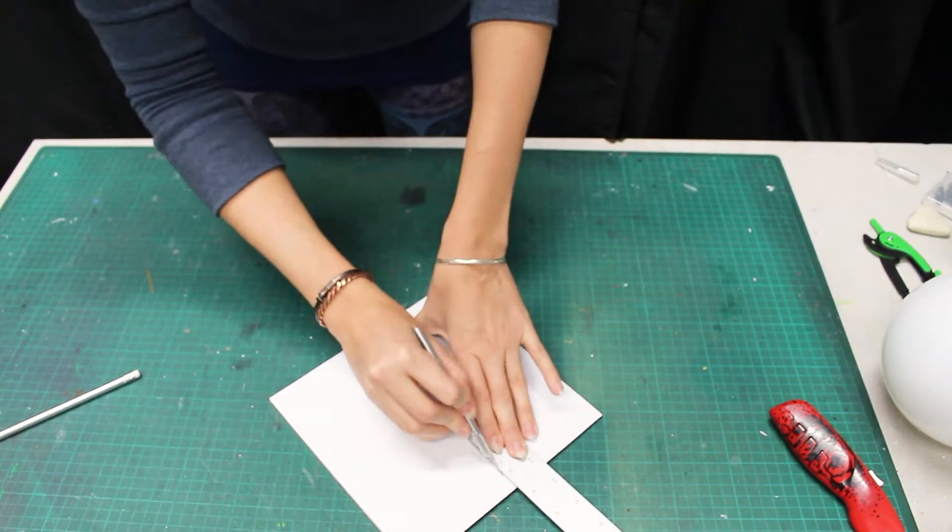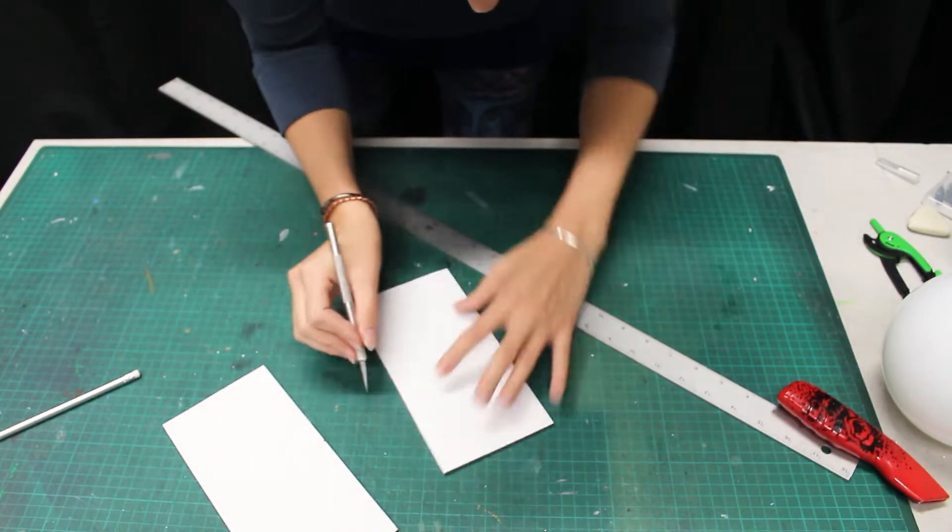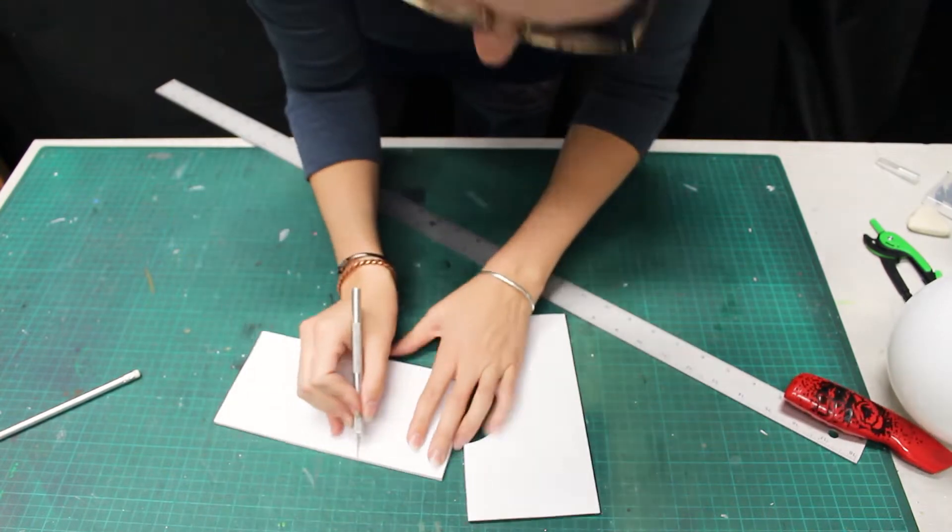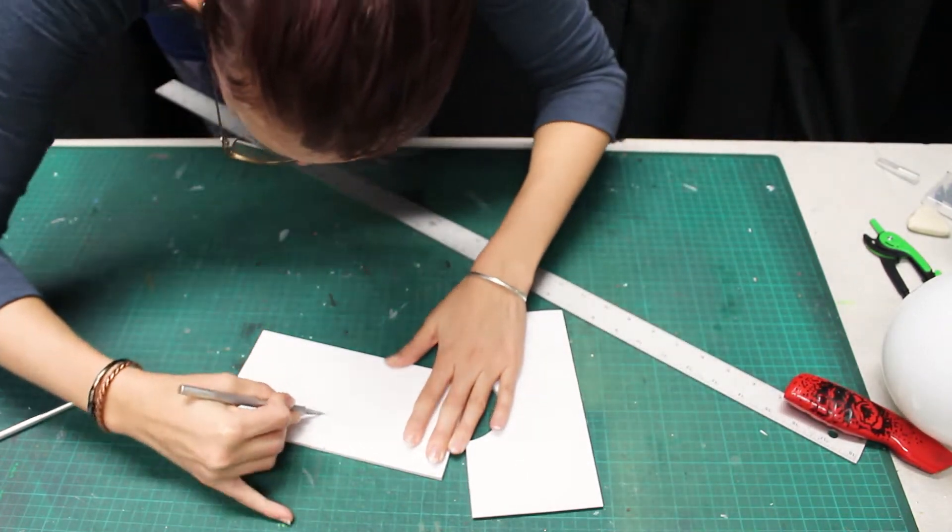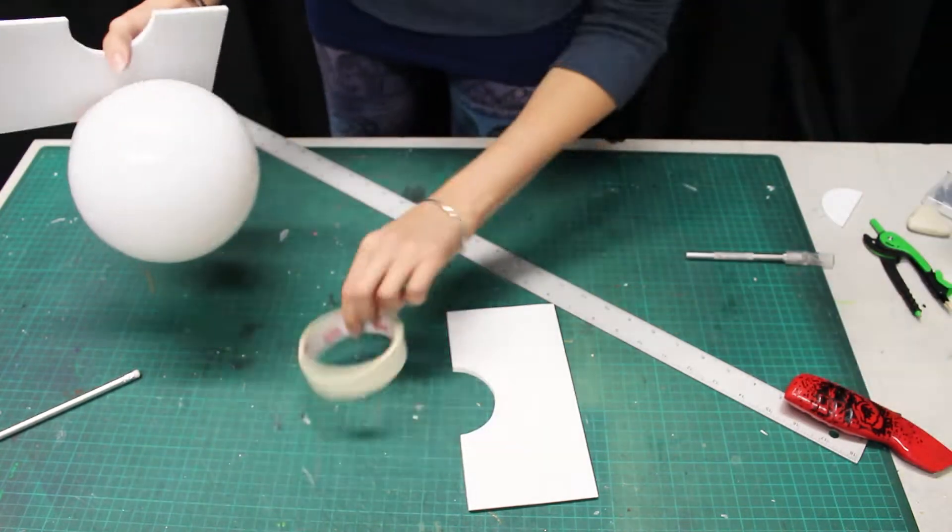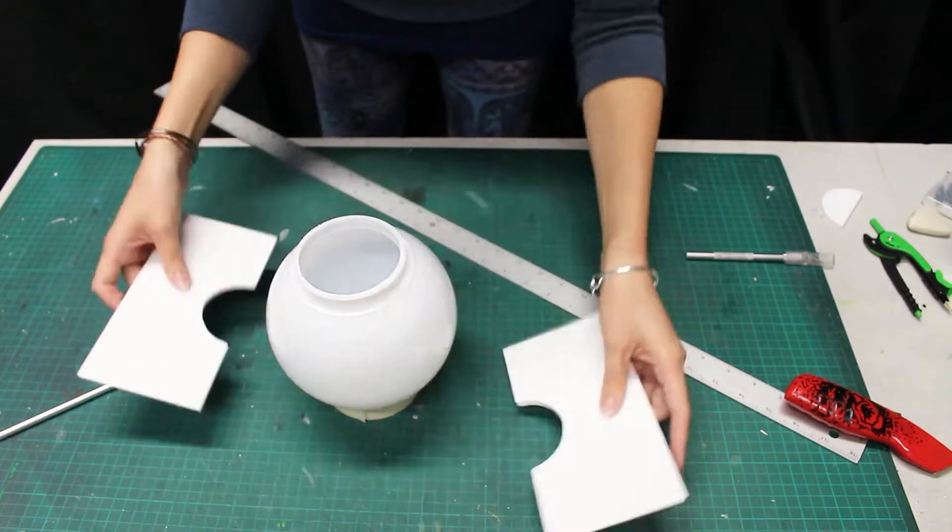First, I'm going to cut my board in half. Then cut out the half circles. Continue to trim away any excess until the two pieces can meet perfectly in the center.